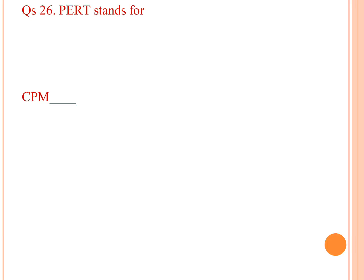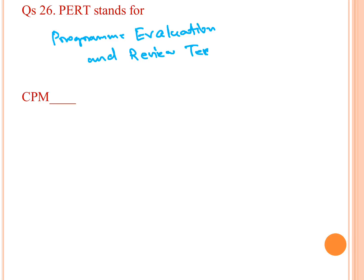What does PERT stand for? PERT stands for Program Evaluation and Review Technique.